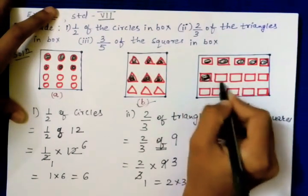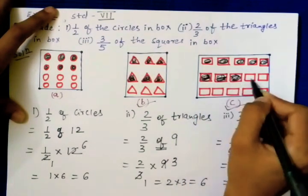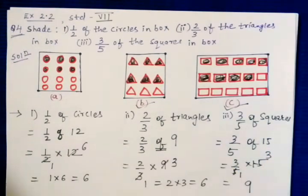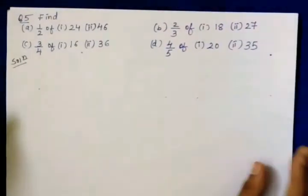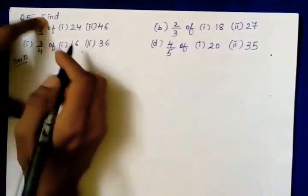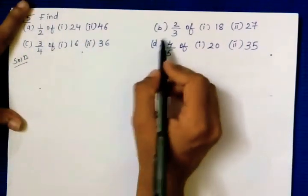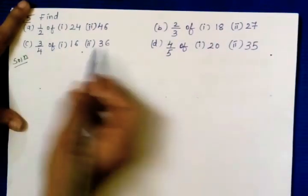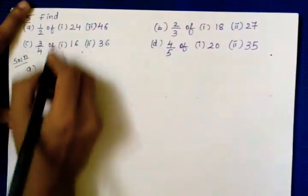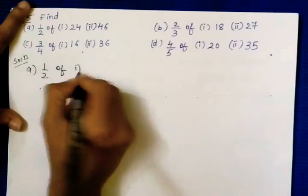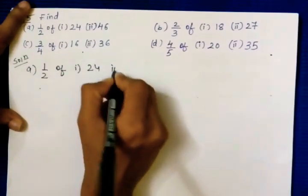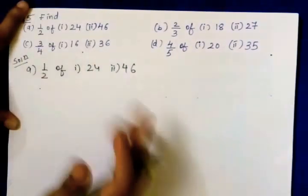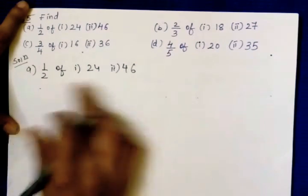So we shade nine squares: one through nine. That was question number 4. Now question number 5: find half of twenty-four and forty-six; next is two-thirds of eighteen and twenty-seven; third is three-fourths of sixteen and thirty-six. Let us start — first one is half of twenty-four and half of forty-six.